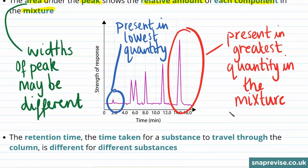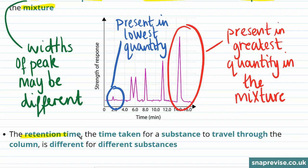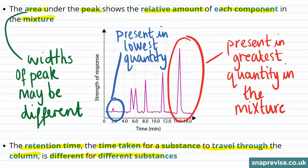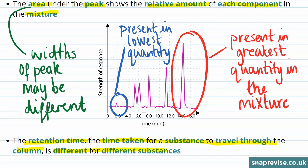The gas chromatography experiment relies on the fact that the retention time, which is the time taken for a substance to travel through the column, is different for different substances, and this is why you see peaks at different points along this x-axis. The retention time will be related to the interaction of each substance with the mobile phase and the stationary phase in the gas chromatography experiment, and this can be used to indicate the likely nature of that substance, which is explained in more detail in the video on gas chromatography.